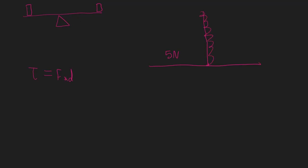Let's say this chain is suspending the lever. I've got a 5 newton force on one side at 3 meters from the center, and a 7 newton force on the other side at 4 meters. So 5 newtons times 3 meters gives us 15 newton meters of torque on one side, and 7 times 4 gives us 28 newton meters on the other side. The torque is unbalanced, so the bar is going to rotate in the direction of the greater torque.